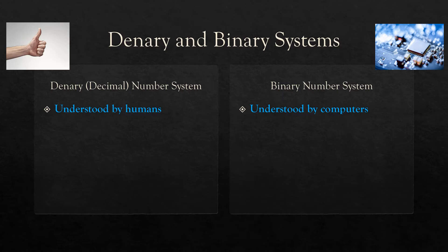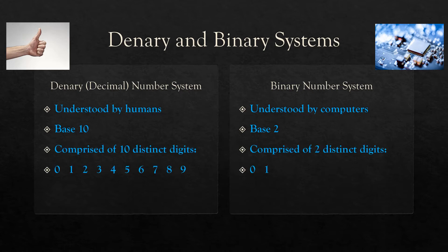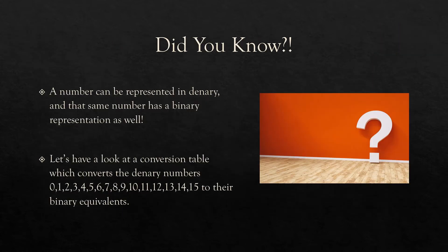Let's recap the few things we looked at. The denary, or decimal number system, is understood by humans and it's base 10. The binary number system is understood by computers and it's base 2. The denary number system has 10 distinct digits — 0 through 9 — and the binary number system has two distinct digits: 0 and 1. A number can be represented in denary, and that same number also has a binary representation. It can also have a representation in base 8, base 5 — you can write any kind of number system. Typically, humans use denary and computers use binary.